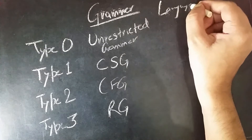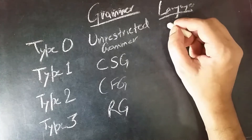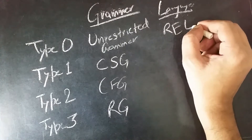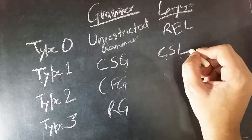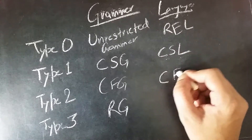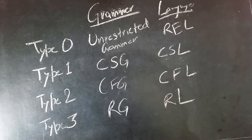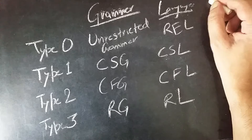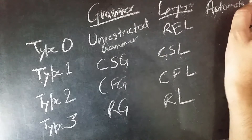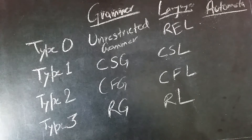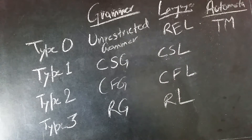The languages accepted are: by type 0 it's recursive enumerable language, by type 1 it's context sensitive language, by type 2 context free language, and by type 3 regular languages. For corresponding automata, by type 0 the automata is Turing machine, the most powerful of them all.